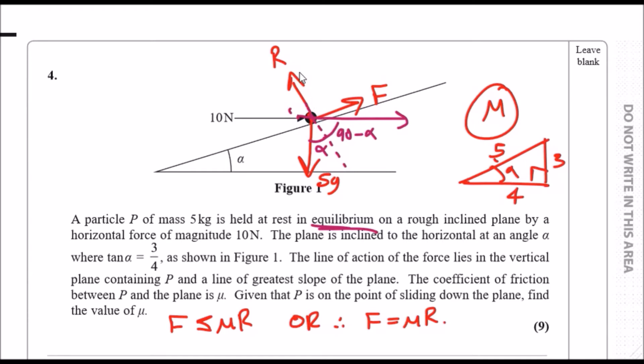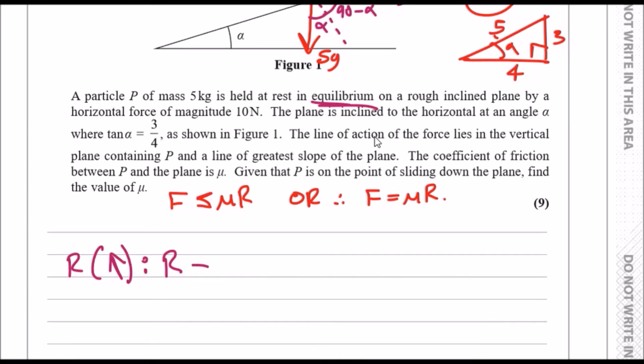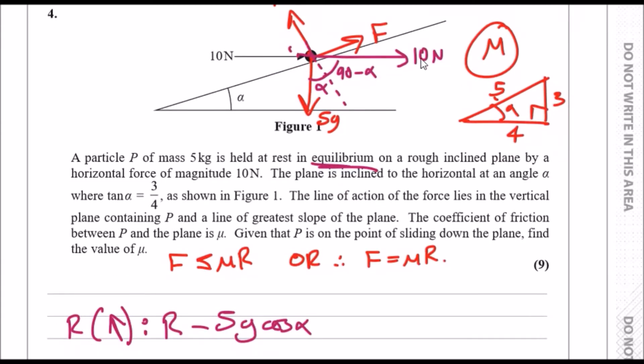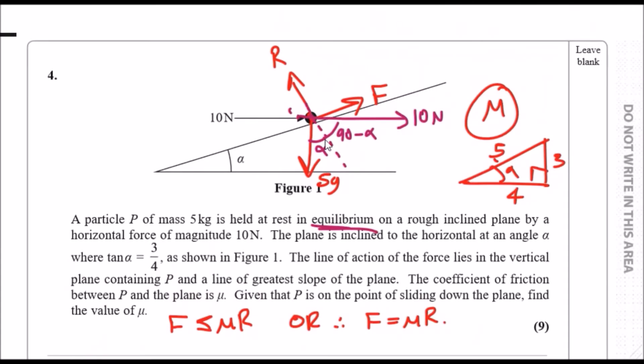How about we start resolving now? Firstly, resolving towards the reaction itself, we should get R, and that's the only upward force. The downward forces: we have 5g cos α, and the 10 newtons, so it will be 10 cos(90 - α). So R minus 5g cos α minus 10 cos(90 - α) equals zero.